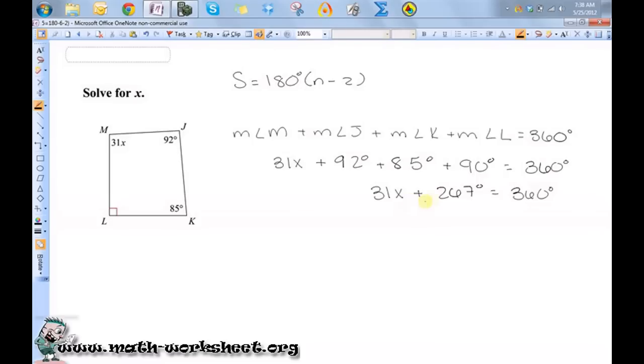If I subtract 267 from both sides, I'll get 31x equals 93. Then if I divide both sides by 31, I get x equals 3.